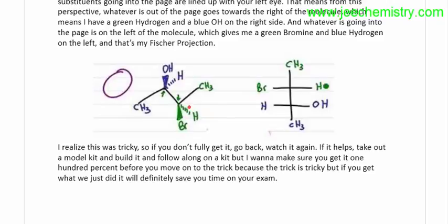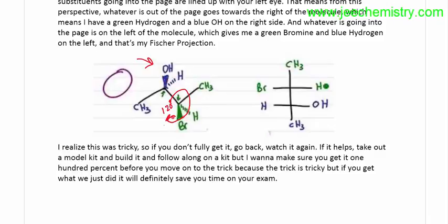Now, if you don't want to rotate by 120 degrees, the compound can also be converted to a Fisher's projection formula without rotation. We need to think about this: this is a wedge and this is a dash. If you rotate this, the wedge becomes a dash and the dash becomes a wedge. If you view from this side without rotating, the wedge will be on the right side, and bromine is coming towards the viewer — it is on the outward side.